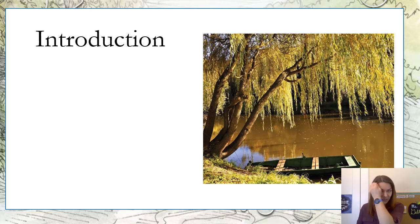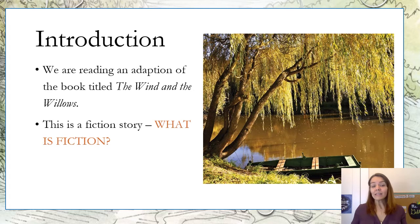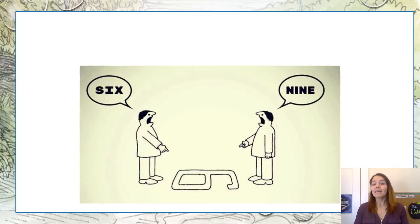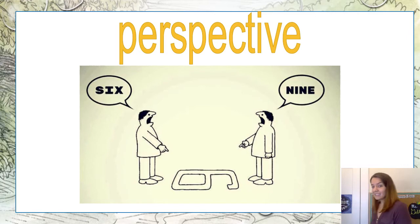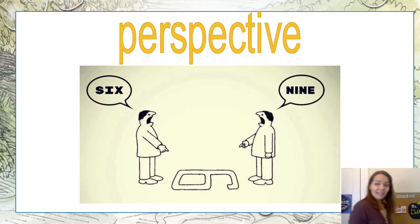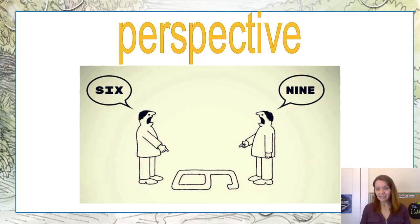We're going to pause on that screen, so don't keep scrolling in your Google Doc until I ask you to. Reminder: we're reading Wind in the Willows, and this is a fictional story — that means fake, it's not true. Today we are focusing on perspective, which is how someone sees something. In this picture, you can see both people are looking at the same thing on the ground. But because one guy is standing over here, he says nine — that's how he's reading it. But the other guy is standing over here and he sees it as six. Your perspective changes how you see something.